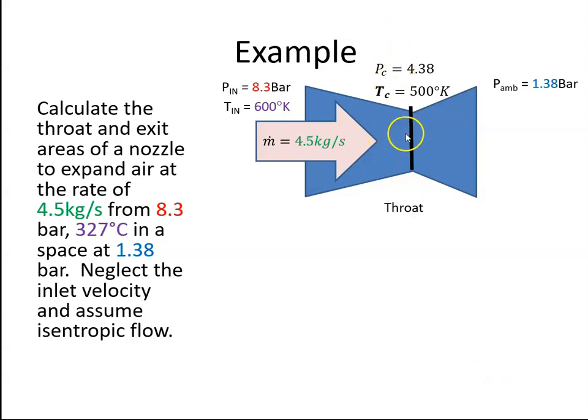So when the nozzle is choked, the velocity of the gas going through the throat is Mach 1, so the speed of sound. And the speed of sound, A, is equal to the square root of gamma R temperature. In this case, the critical temperature. So if I plug in those values, gamma is 1.4, the universal gas constant is 287, the critical temperature we just calculated is 500. That works out to be 448.2 meters per second.